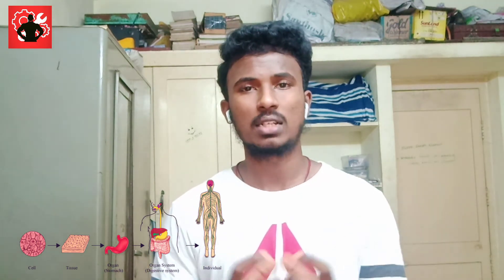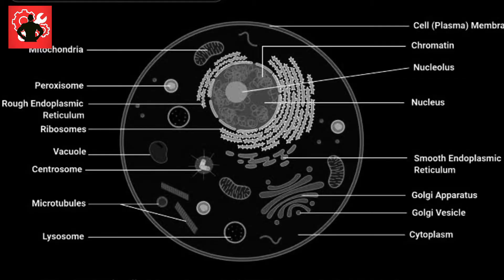Let's talk about the study involving cells and tissues. A tissue is a group of cells. If we look at the cells within a tissue, each cell contains a nucleus — so a tissue has multiple nuclei.